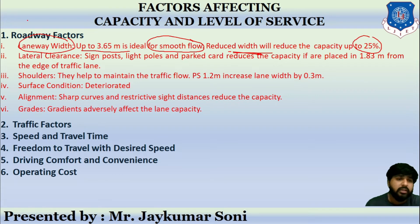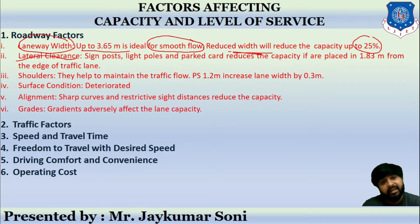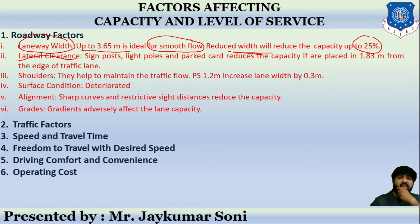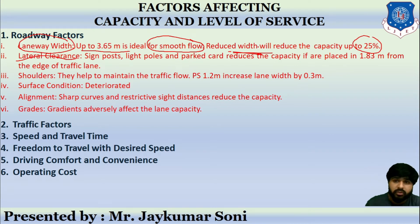The second roadway factor is lateral clearance. Obstructions such as signposts, light poles, and parked vehicles can affect capacity. If these objects are placed within 1.83 meters from the edge of the lane line, they reduce road capacity.